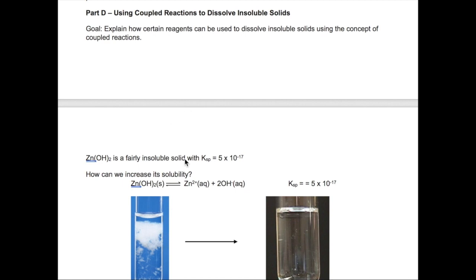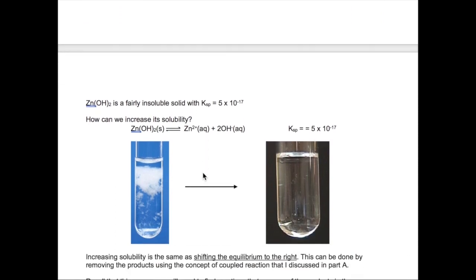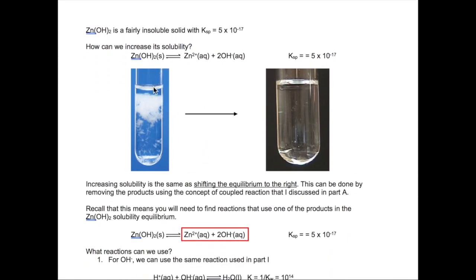So the idea is we will start with an insoluble salt, in this case zinc hydroxide, which has a Ksp of 5 times 10 to the minus 17. Our goal is to increase its solubility, which means to make the precipitate of zinc hydroxide disappear completely or at least much less. Based on the solubility equilibrium, that means shifting the reaction to the right. How can we accomplish this?